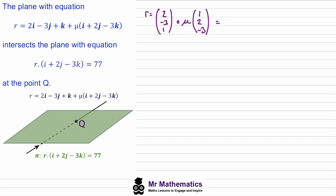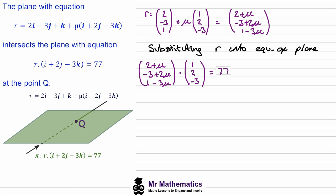The general x-value of any point on this line will be 2 plus μ, the general y-value will be negative 3 plus 2μ, and the general z-value will be 1 minus 3μ. Now that we have the general point anywhere along the line, we can substitute this value of r into the equation of the plane, dotting the general point along the line with the normal vector to the plane.